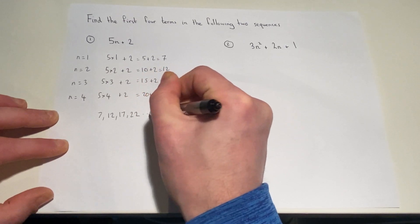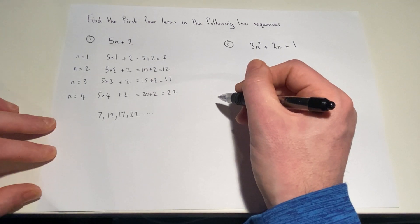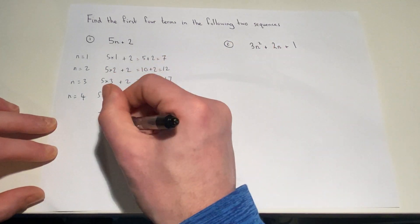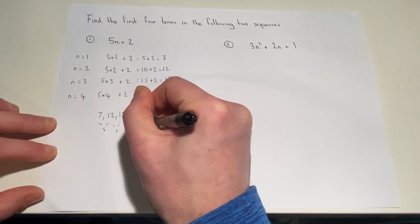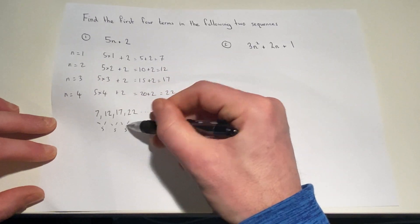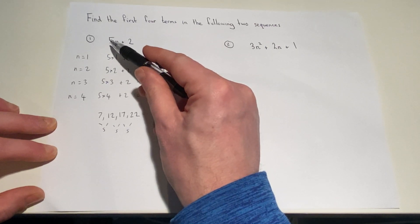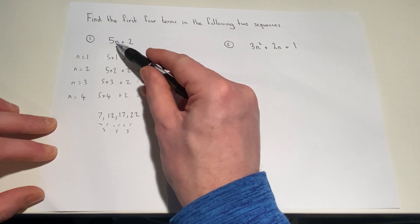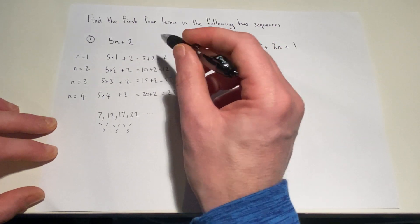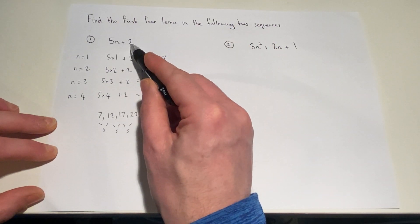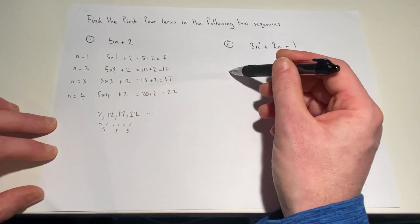And this goes on and on forever. A quick observation about this sequence: the difference between each of the terms is 5, and this first difference is the same as the coefficient next to the n — and that's always the case. Another observation: 5 plus 2 also gives the first term, which in this case is 7.